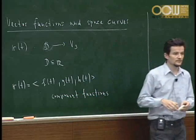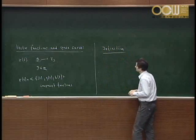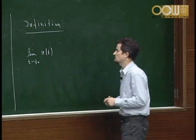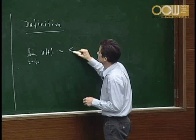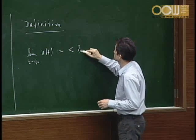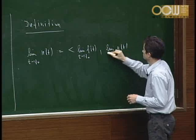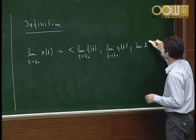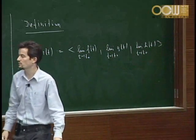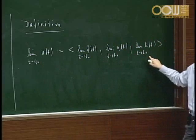For the definition of the limit: the limit as t → t₀ of a vector function is defined component-wise as the vector of the three individual limits. This limit exists if and only if all three component limits exist. Similarly, a vector function is continuous if the limit equals the value of the function at that point.